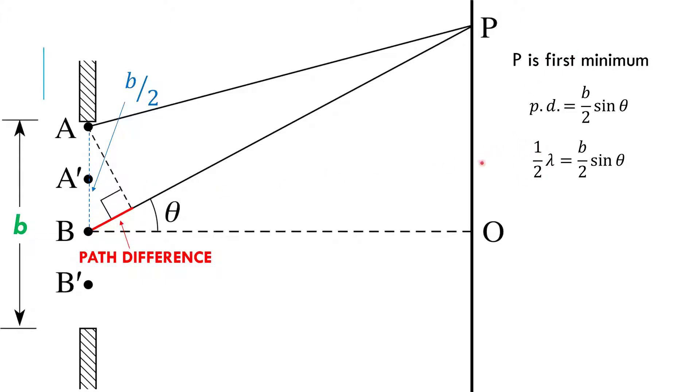So there's the setup. That path difference is half a wavelength. Now we math.